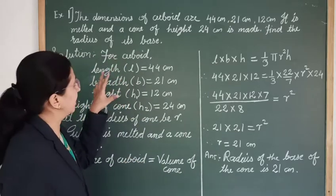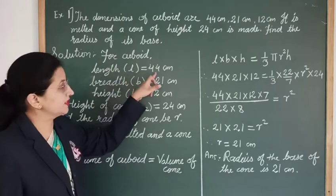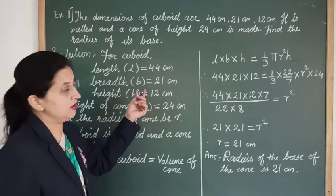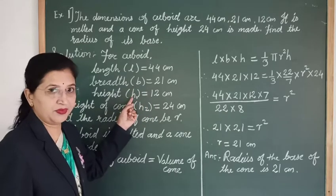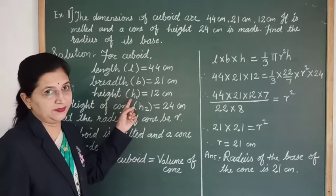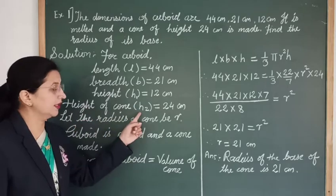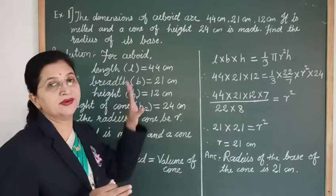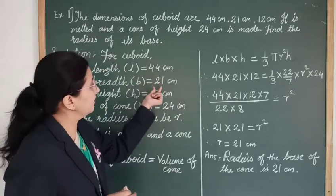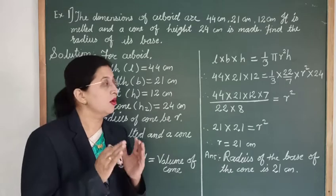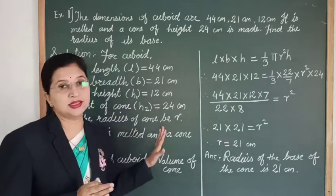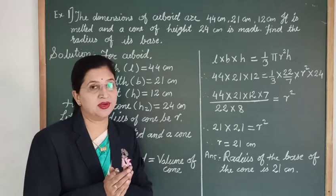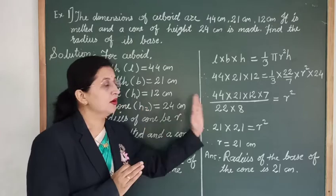First, we write down the dimensions of the cuboid: length L = 44 cm, breadth B = 21 cm, and height H1 = 12 cm. Since there are two heights, we consider the height of the cuboid as H1 and height of the cone as H2 = 24 cm. Make sure the given values have the same units. If not, convert them before putting the values into the formula.